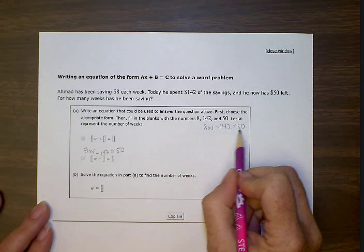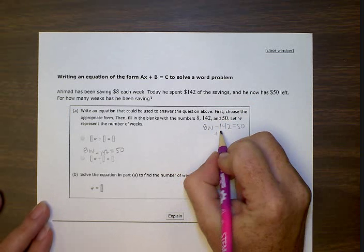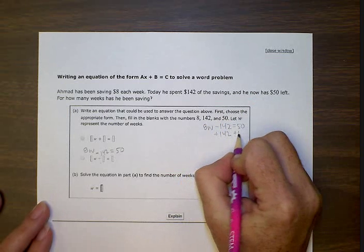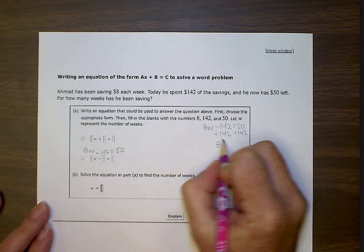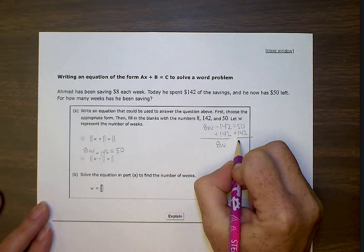So we have two numbers. Let's combine those two numbers. Let's add 142 to both sides. That gives us 8W over on this side and 192 on this side.